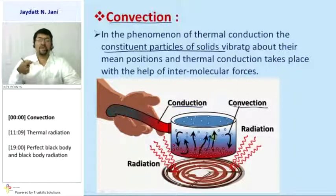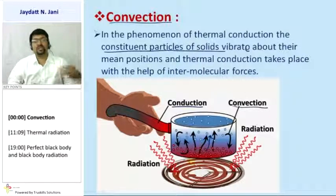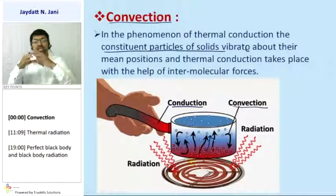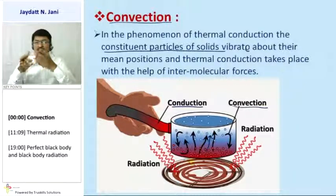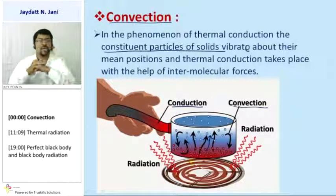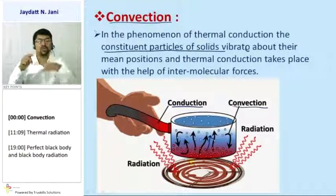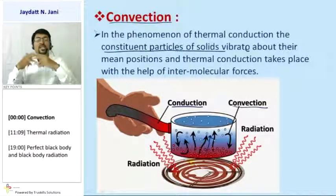After a few minutes, every molecule's temperature becomes the same. For example, if the temperature starts at 30 degrees, the particles at the bottom rise to 40 degrees. Increased temperature decreases density, so lighter particles go upward and heavier particles come downward. The cooler particles below also get heat, reach 40 degrees, and go up again. This cycle continues and the temperature of all particles keeps changing until equilibrium.